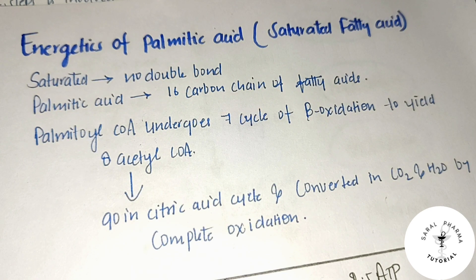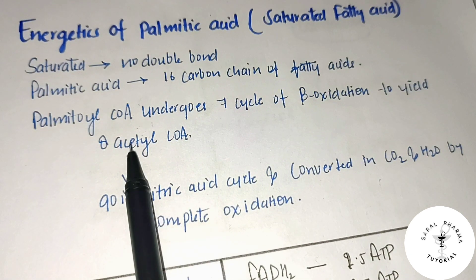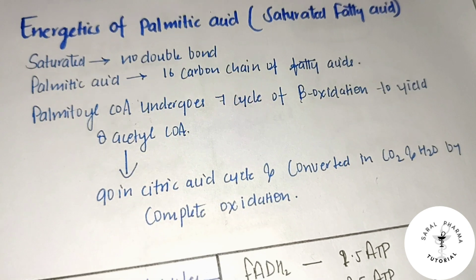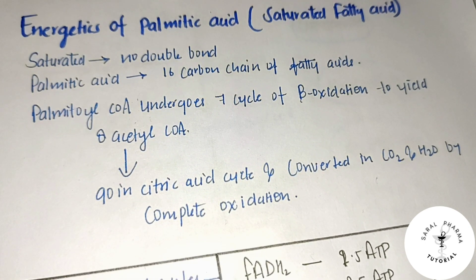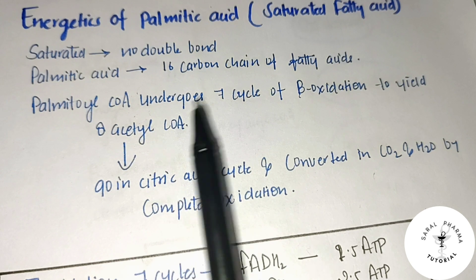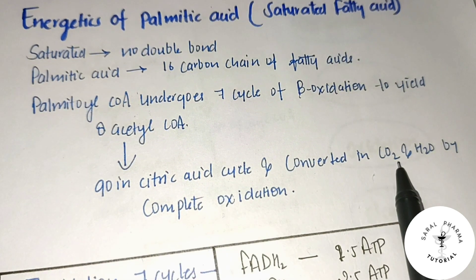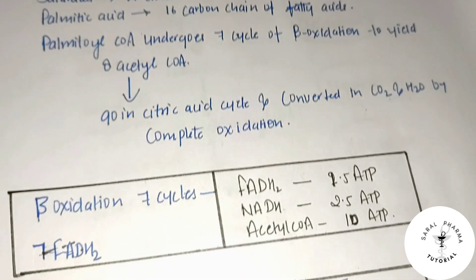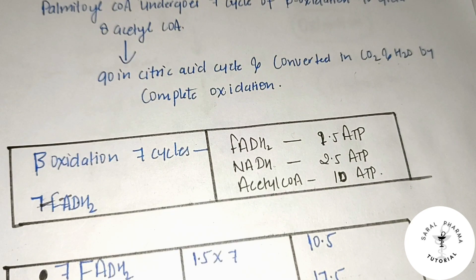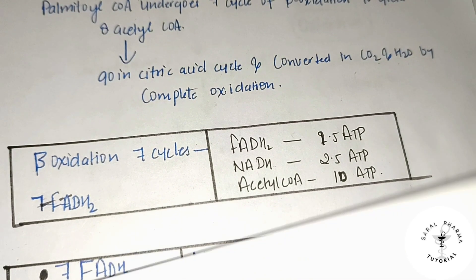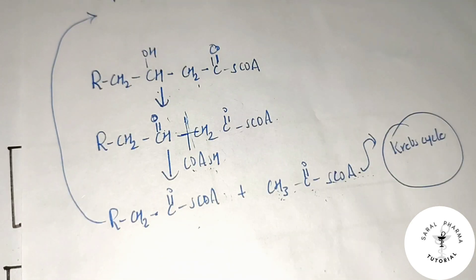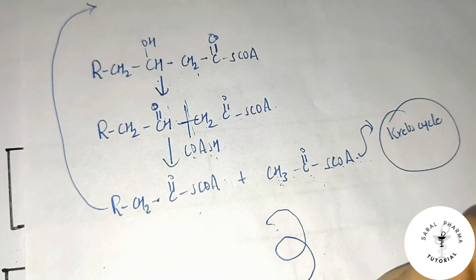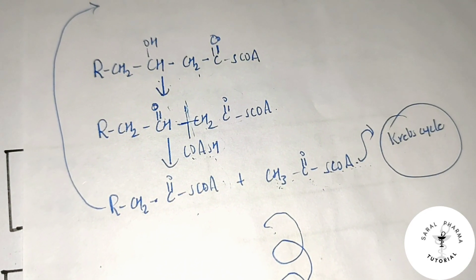Palmitoyl is the activated form of palmitic acid. After 7 cycles of beta-oxidation, we get 8 acetyl CoA. The number of acetyl CoA depends on how many cycles occur. For palmitic acid, beta-oxidation proceeds through 7 cycles to give 8 acetyl CoA.